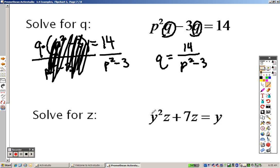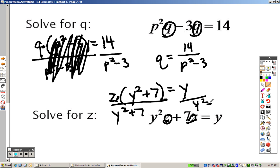So it's the same idea down here. They both have a Z. So if I take out the Z, I get Y squared plus 7, and that equals Y. Since it's Z times all of that, I can divide both sides by Y squared plus 7, because now they'll be gone. So I'll get Z equals Y over Y squared plus 7.